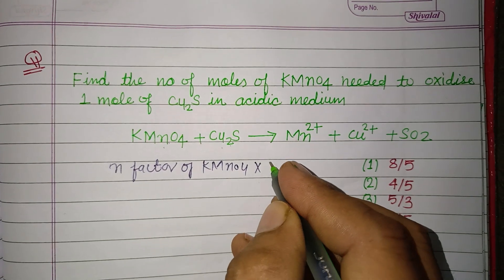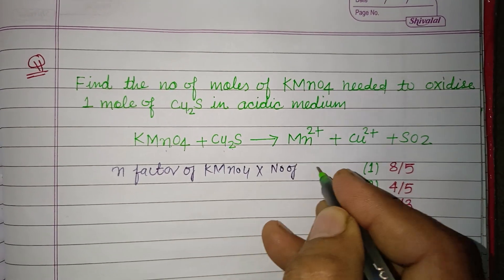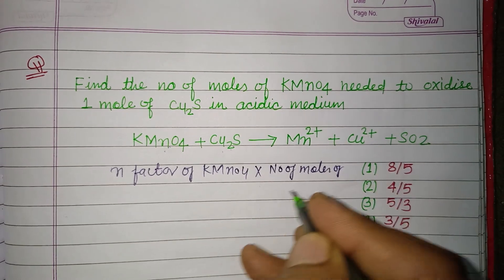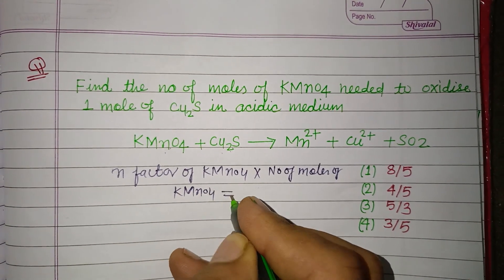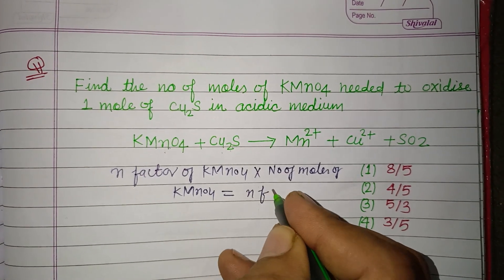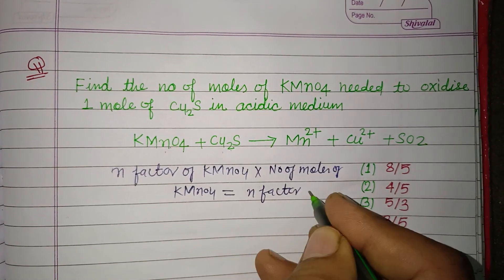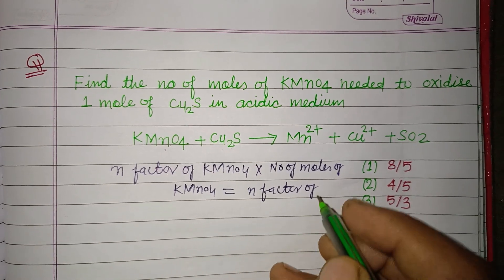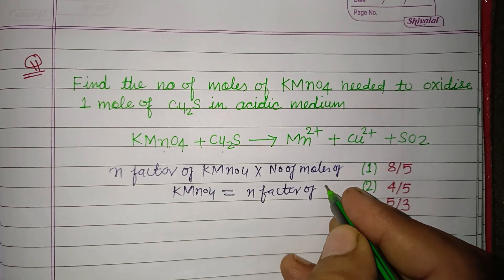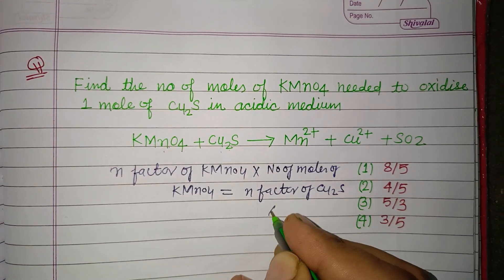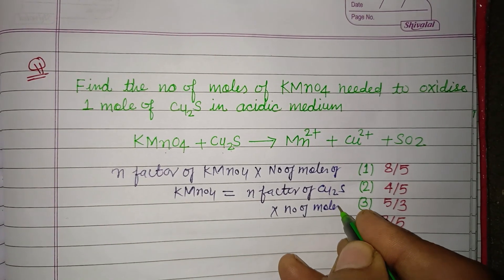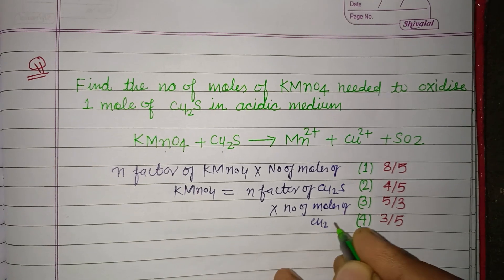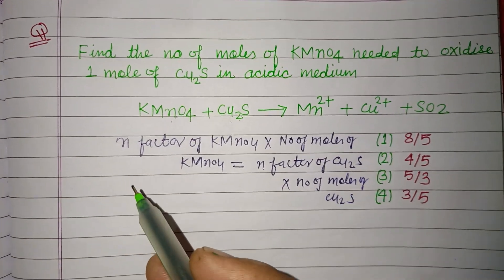n-factor of KMnO4 times the number of moles of KMnO4 equals n-factor of Cu2S times the number of moles of Cu2S. The n-factor is